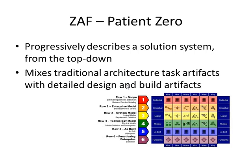The Zachman matrix of architecture artifacts can be used to progressively describe an architecture in more detail, in a top-down fashion, going from high-level information to a more detailed description. Closer examination of each of the cells of the matrix reveals that some artifacts are produced that may be considered works of a dedicated IT architect, while other artifacts are those of designers and developers. As can be seen in the diagram at the bottom right, which is a later version of the ZAF, more concepts appear than were present in the earlier version.